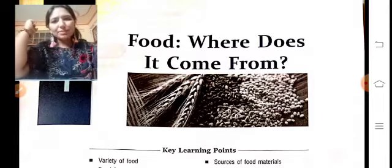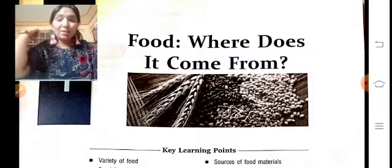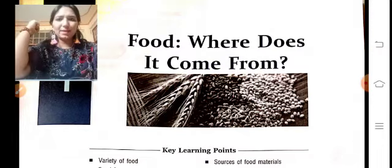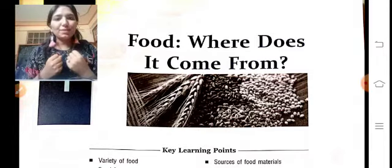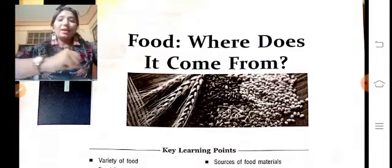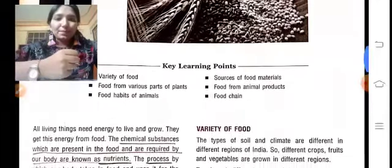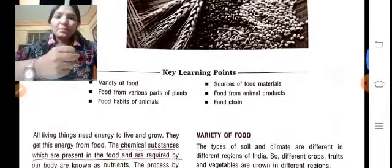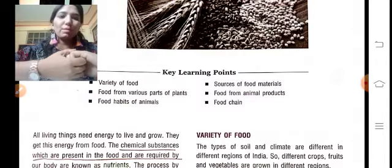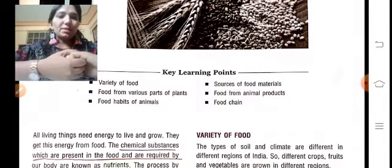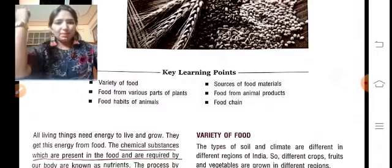Food के बारे में हम सब जानते हैं। Food के बिना हमारा दिन नहीं गुजरता। Food से हमें energy मिलती है। इस chapter में हम variety of food, sources of food material, food from various parts of plants, food from animal products, food habits of animals, और food chain के बारे में पढ़ेंगे।